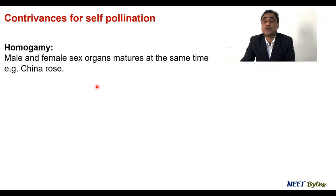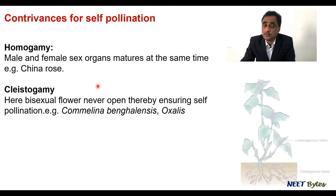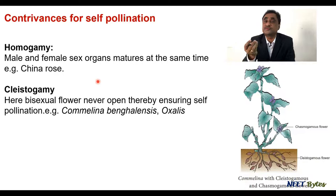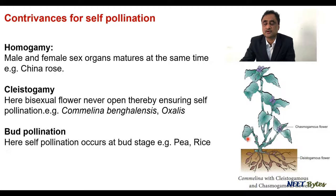Now let's talk about contrivances for self-pollination. The typical one is homogamy — the maturity of the sex organs occurs at the same time, so if male and female structures mature simultaneously, the plant naturally goes for self-pollination. There is one more called cleistogamy — in cleistogamy, flowers never open. If the flowers do not open, the male and female structures remain inside, so the only possibility is self-pollination. The example is Commelina, and also groundnut — you can see the closed flower where the only possibility is self-pollination.